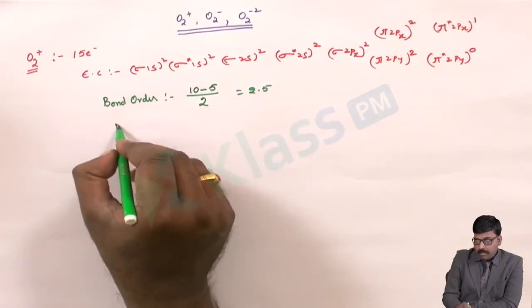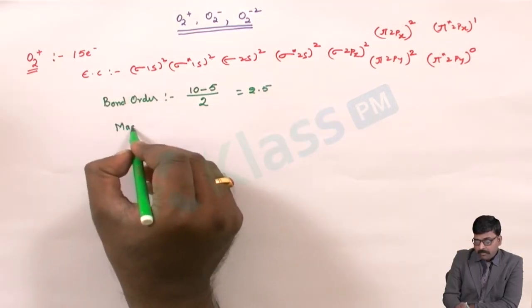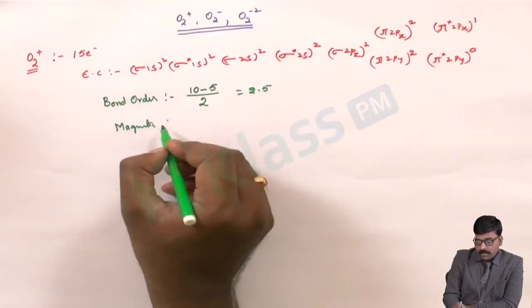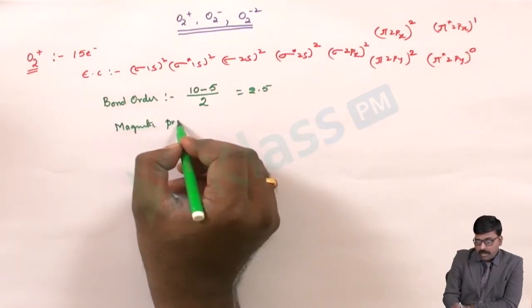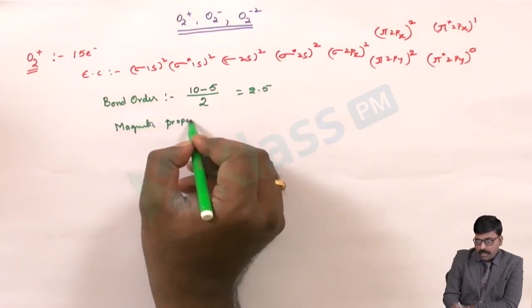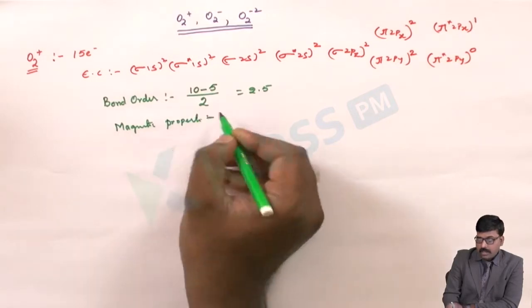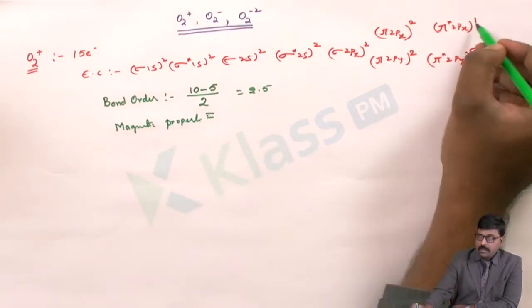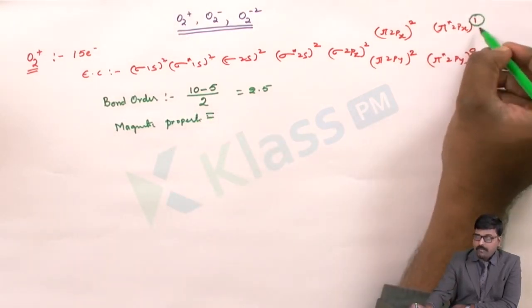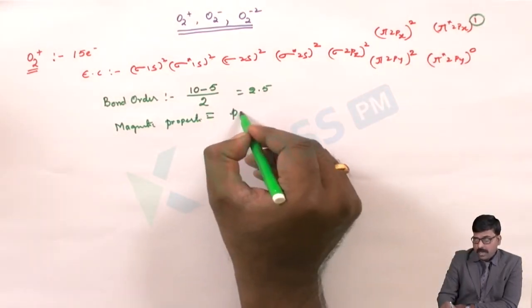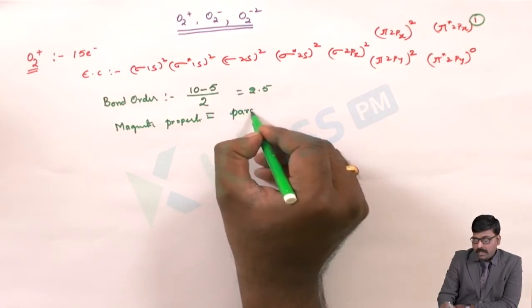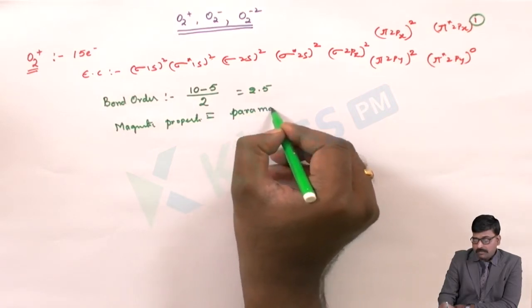The magnetic property of O2 plus: it has one unpaired electron, so it is paramagnetic in nature.